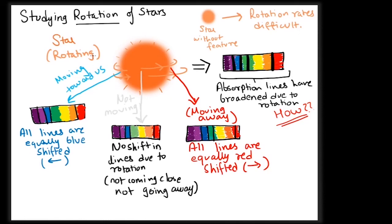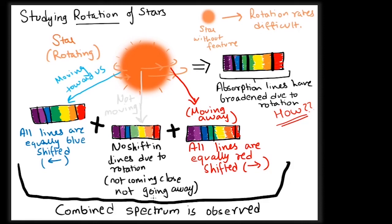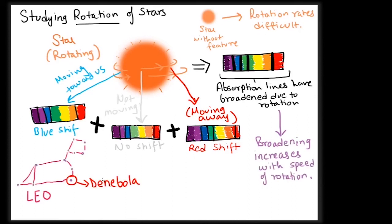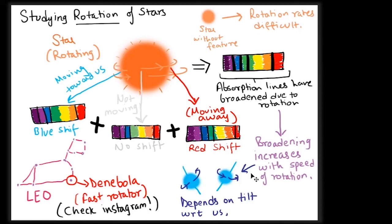Since stars appear as tiny objects, the spectra from blue shifted end, the middle end, and the red shifted end arrive together as a single radiation. And the combined effect of this is to give a broadened appearance to the spectral lines. The broadening is directly proportional to the rotational velocity. Using this, we have detected many fast rotators, the fastest being Denebola, a star in the Leo constellation. To know more about these interesting fast rotator stars, you can check my comic on Instagram. The observed broadening of the spectral lines will also depend on the tilt of the rotational axis with respect to us.